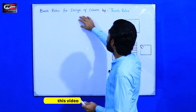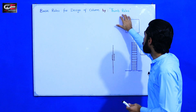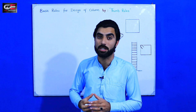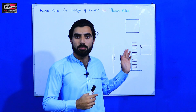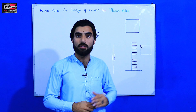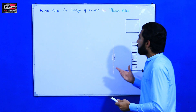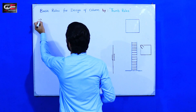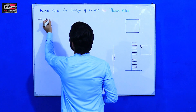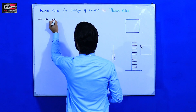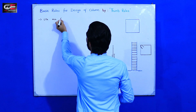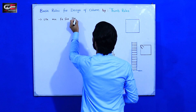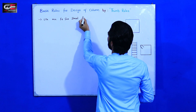Let's start. The topic is basic rules for design of RCC columns by thumb rules. Thumb rules are also called the blind method because this is not a specific design — it is an old method of construction.